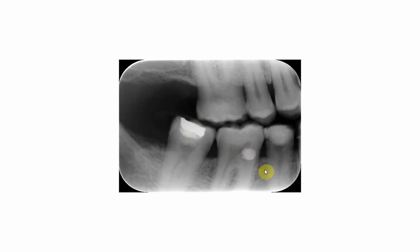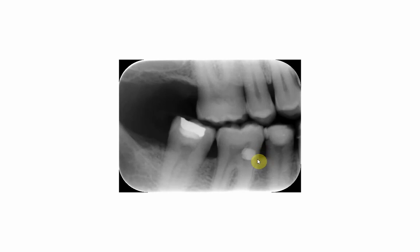If we look at the lower 6, we find a circular filling — it is a class 5 filling placed mostly on the buccal surface of the lower 6, likely to treat cemental caries. If you look, this is the level of the crown, this is the CEJ — drawing a line from the mesial to the distal — and this area from the CEJ downwards represents the level of the alveolar crest.